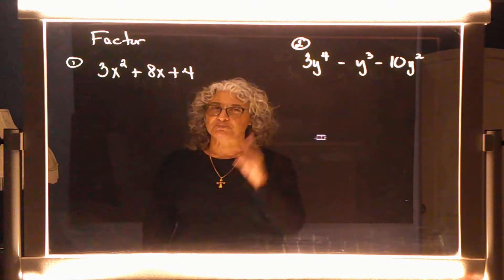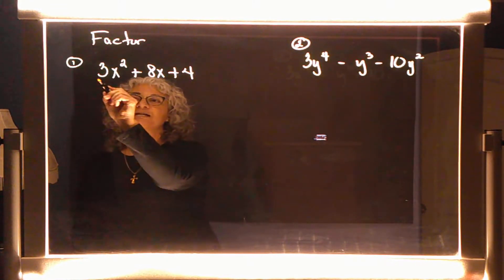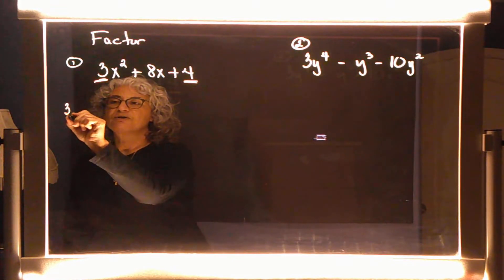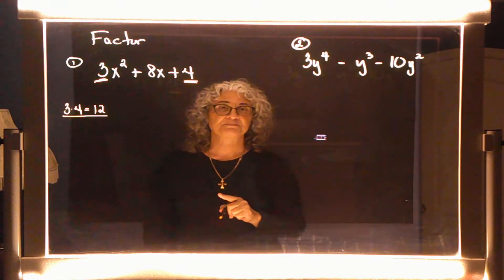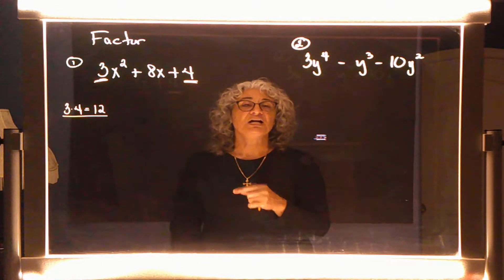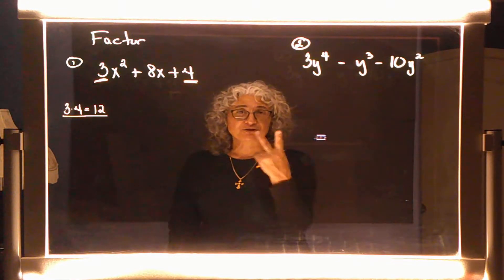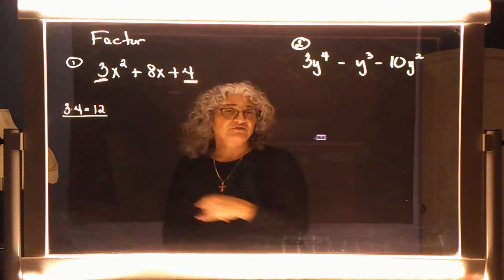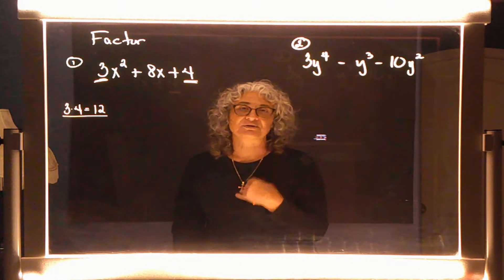Do you remember the observation? I'm going to take the first term and the last term and multiply those together. A positive three times a positive four gives me a positive 12. Now I need to find the combinations that multiply to positive 12, because when we expand, the two middle numbers are also supposed to multiply to positive 12.